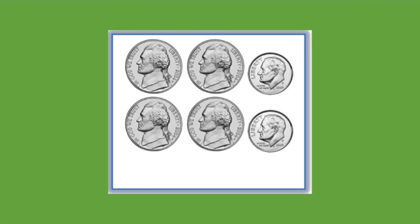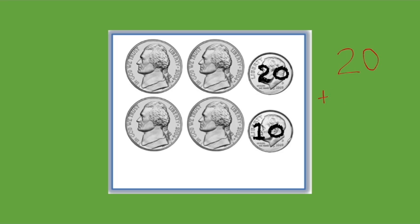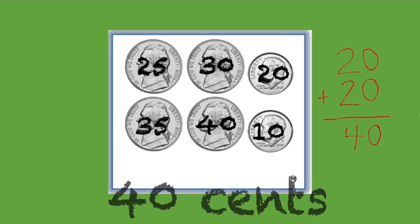How much money do you see here? First, count the dimes — count by tens: 10, 20. So we have 20. Now count the nickels — count by fives: 5, 10, 15, 20. So 20 plus 20. Let's add the ones column first: 0 plus 0 equals 0, and 2 plus 2 equals 4. Let's see: 25, 30, 35, 40. 40 cents is correct.